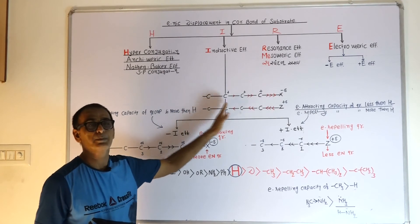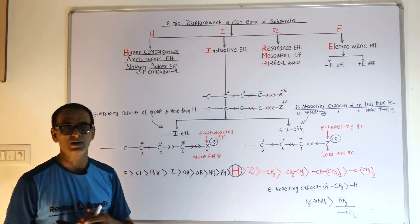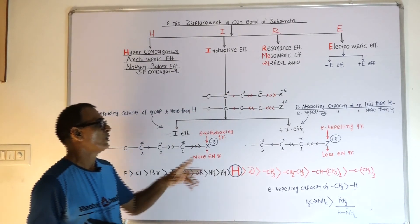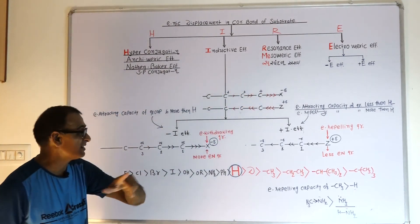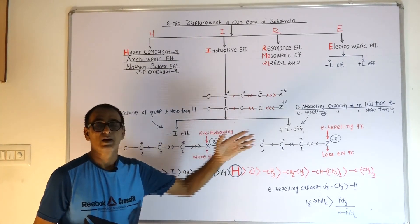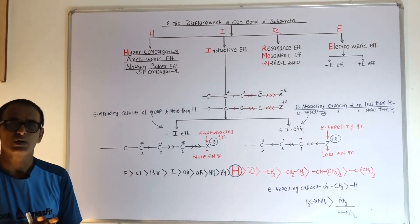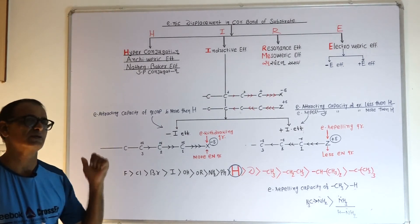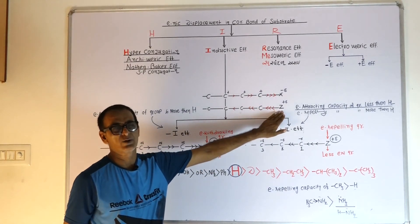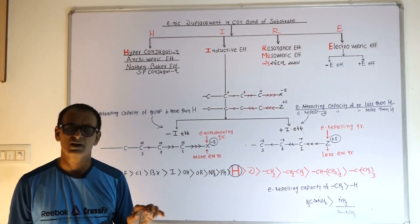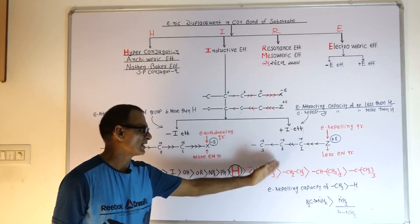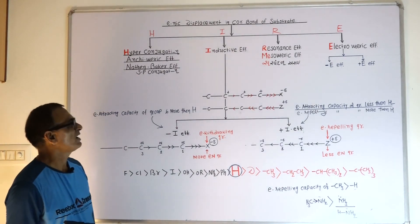Due to the electron-withdrawing groups (minus I effect), a plus delta charge is created on the carbon chain, while the group itself bears a minus charge. Due to electron-repelling groups (plus I effect), a minus delta charge is created on the carbon chain and a plus delta charge on the group. Next, we will study about resonance or the mesomeric effect.